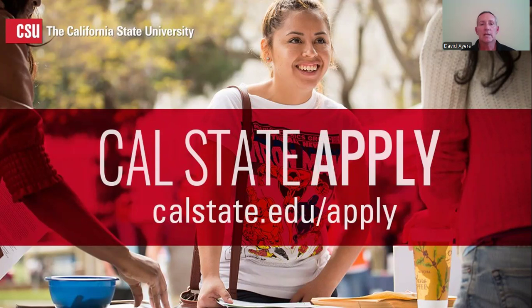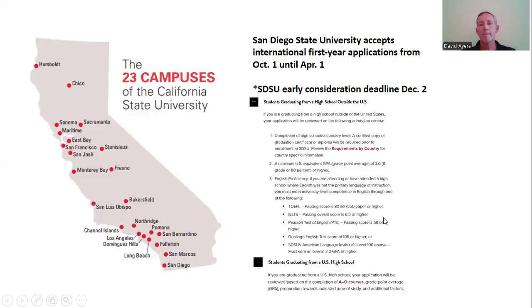Students can access the online application by visiting calstate.edu/apply. As a reminder, San Diego State University accepts international first-year applications from October 1 until April 1 each year, but we strongly encourage international first-year students to apply prior to the early consideration deadline of December 2.